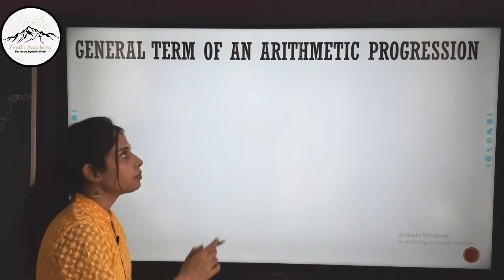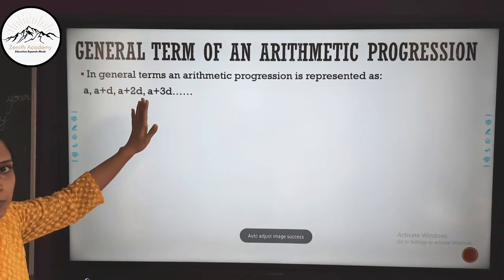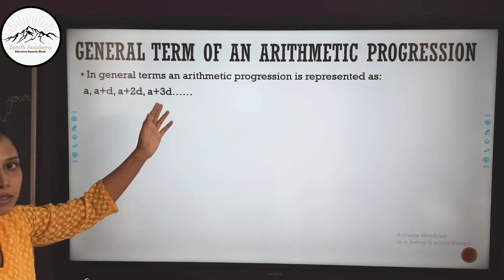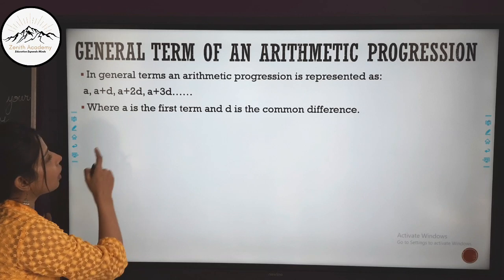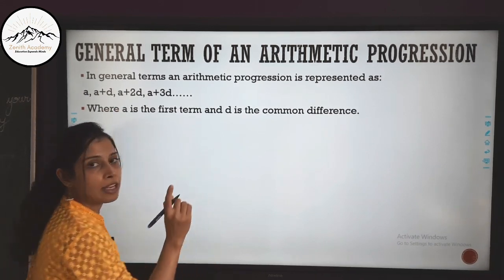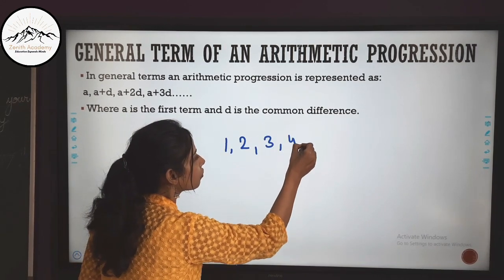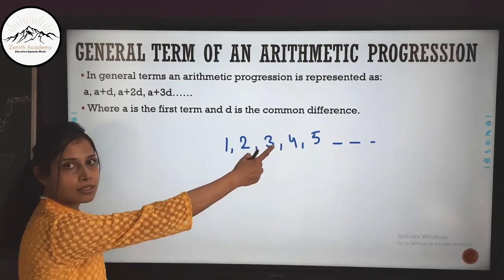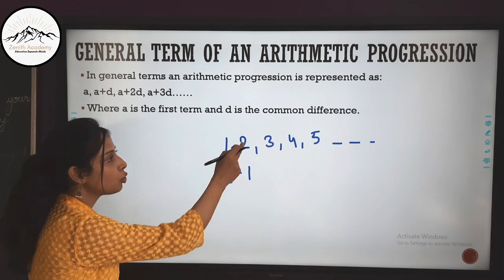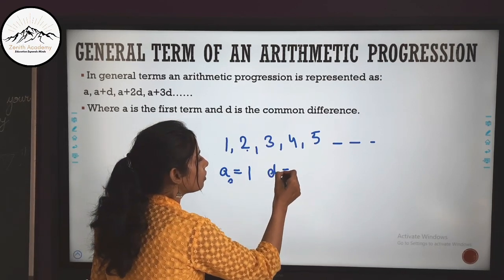In general terms, an AP is always represented as A, A+D, A+2D, A+3D, and so on. We know A is the first term and D is the common difference. Let's take a basic example: 1, 2, 3, 4, 5 and so on. This is an arithmetic progression where A equals 1, and the common difference D equals 1, since 2−1 = 3−2 = 4−3 = 5−4 = 1.